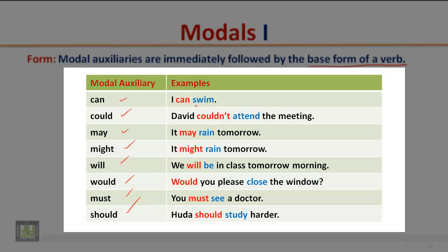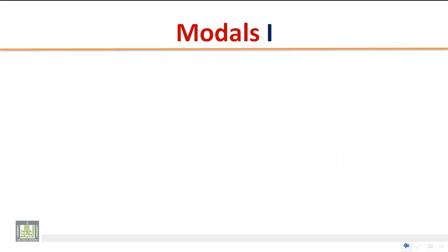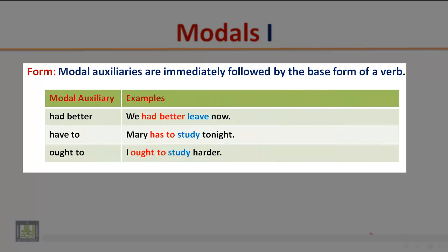Notice that the base form of the verb is used after the modal auxiliaries. More examples: Had better — We had better leave now. Have to — Mary has to study tonight. Ought to — I ought to study harder. Again, the base form of the verb is used after the modal auxiliaries.